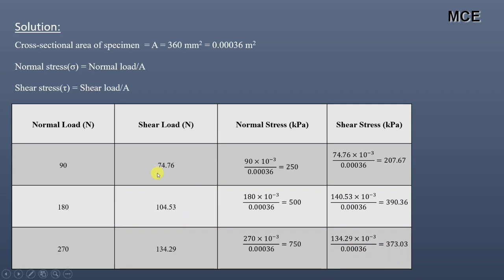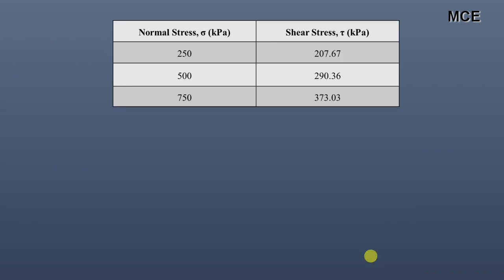So 74.76 Newton of shear load becomes 207.67 kilopascal of shear stress, 104.53 Newton becomes 390.36 kilopascal, and 134.29 Newton becomes 373.03 kilopascal of shear stress. Now that we have the values of normal stress and shear stress, we can plot a graph.